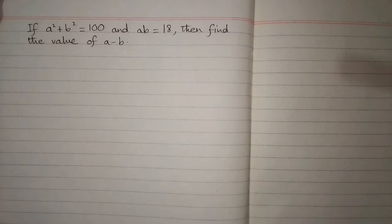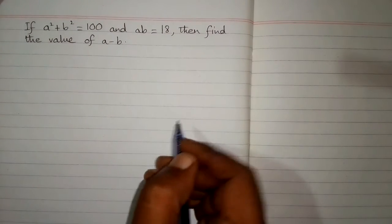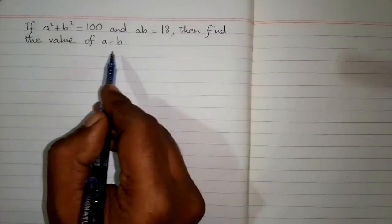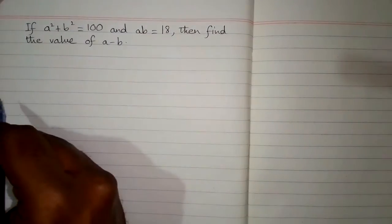If a squared plus b squared is equal to 100 and ab is equal to 18, then find the value of a minus b.